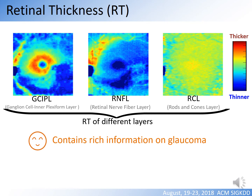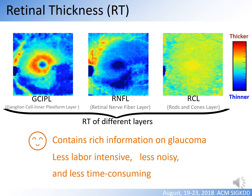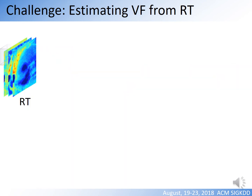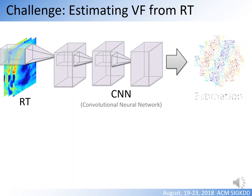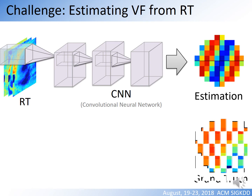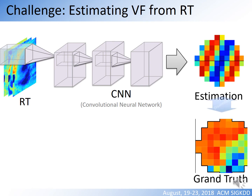Measurement of retinal thickness is less labour intensive, less noisy, and less time consuming. In order to overcome difficulties of visual field testing, we aim to estimate visual field measurements from retinal thickness measurements. In previous work, a CNN was used for this estimation, but unfortunately this naive approach has failed to maintain sufficient accuracy to be used in clinical practice.